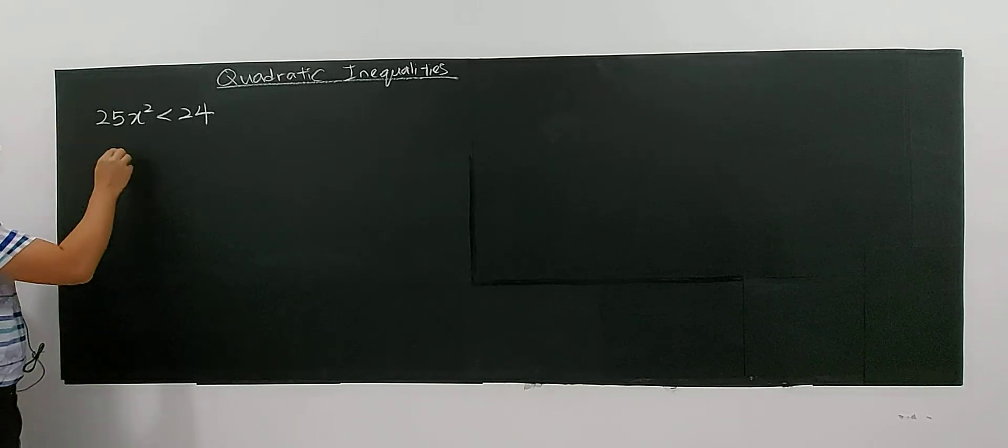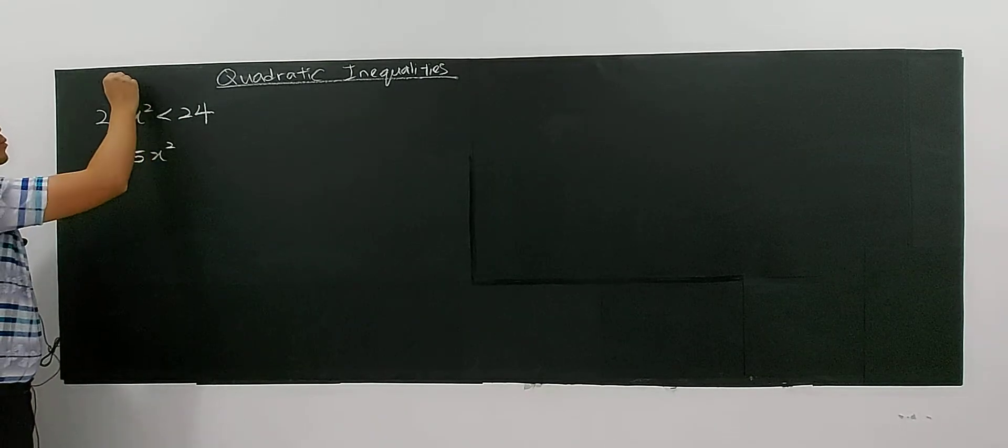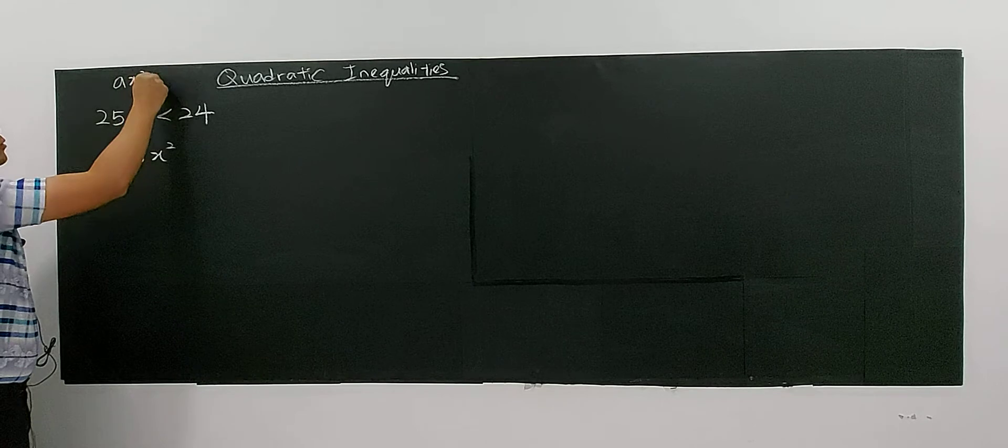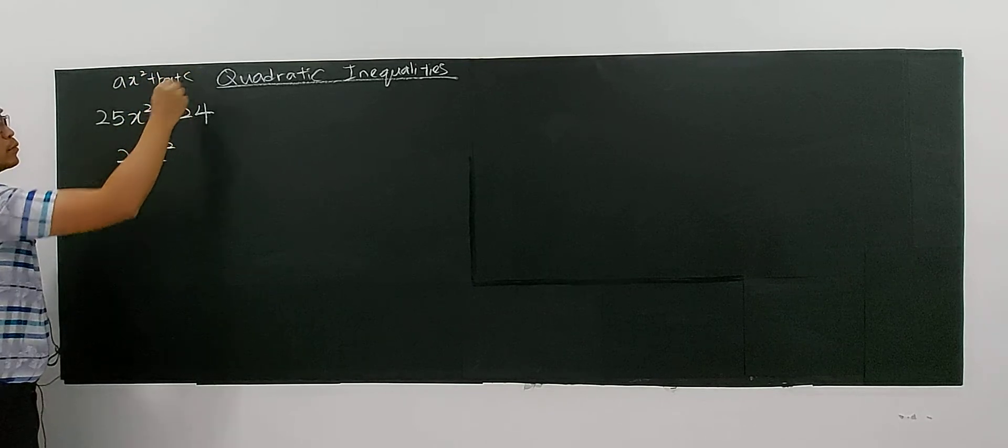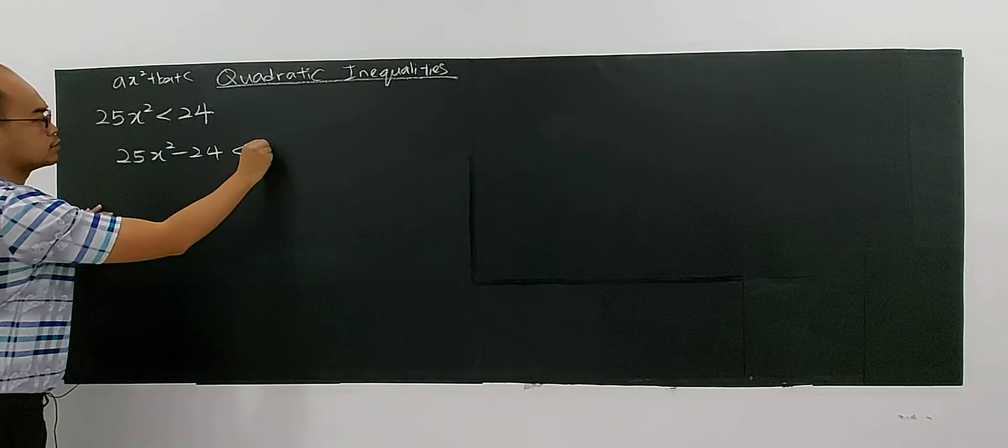I'm going to show you how to solve this. 25x square. Always make it become a general form. Always in a general form. So minus 24, less than 0.